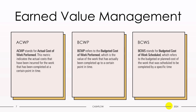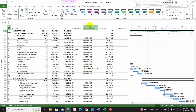BCWP refers to the Budgeted Cost of Work Performed, which is the value of the work that has been completed up to a certain point in time. It is the portion of the total budget that was planned for the work that has been completed. BCWP is a measure of the earned value of the project, and you can find all of this in the fields. For example, if Task A was planned to cost ten thousand dollars in total and fifty percent of the task is complete, then the BCWP would be five thousand dollars.